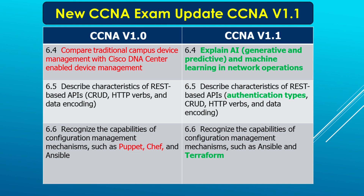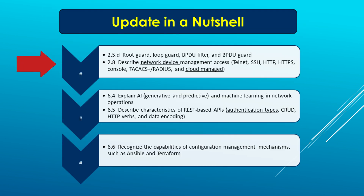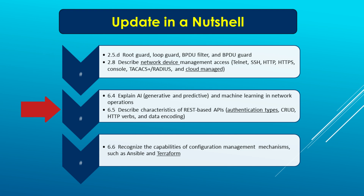In a nutshell, here are the latest changes: root guard, loop guard, BPDU filter, and BPDU guard have been added to spanning tree protocol. For network device management, cloud managed has been added alongside WLC. AI and machine learning terminology in network operations is new. For REST-based APIs, authentication types have been added. And in configuration management, Puppet and Chef have been removed while Ansible remains and Terraform has been added.